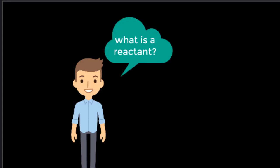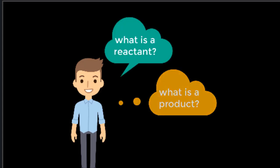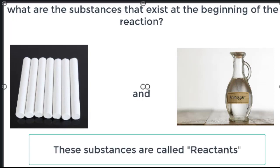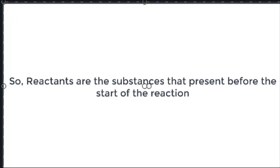Now, let us discuss the second objective. What is a reactant? What is a product? Let's go back to the reaction between chalk and vinegar. What are the substances that exist at the beginning of the reaction? They are the chalk and vinegar. These substances are called reactants. So reactants are the substances that present before the start of the reaction.